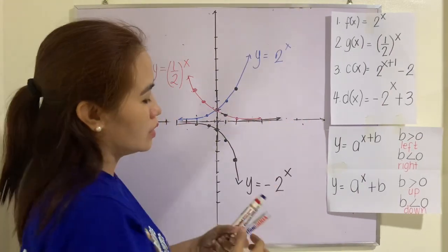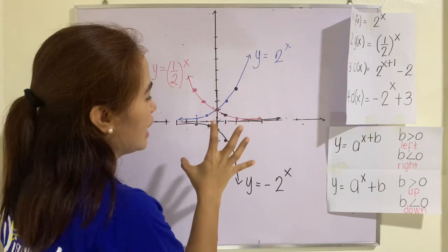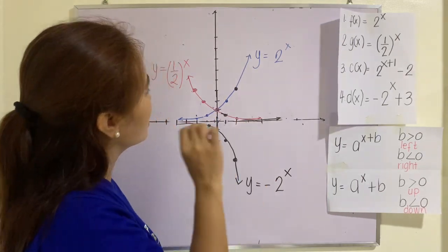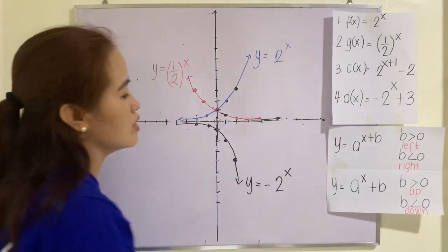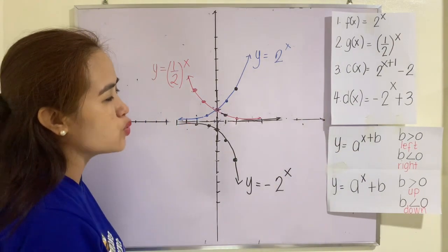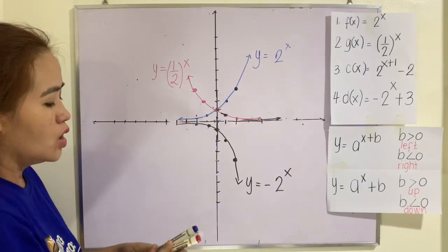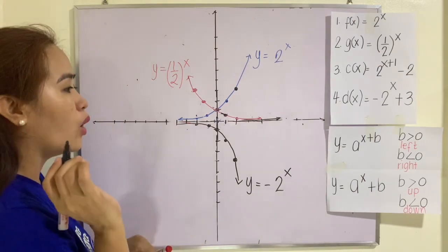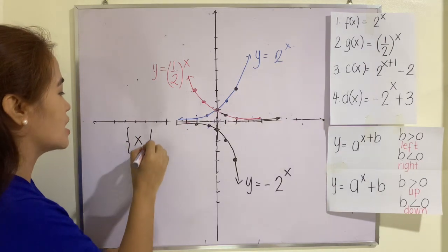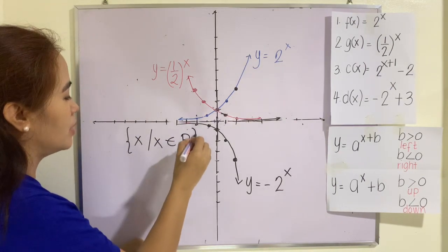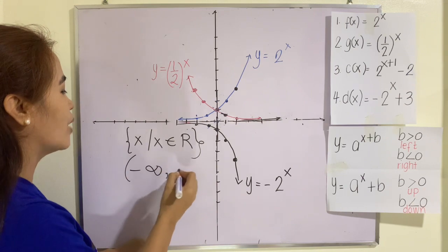How are we going to get the domain of this? Always remember that whatever your graph is, it goes always in all x's from negative infinity to positive infinity. So whatever your graph is, whatever your base is, it covers always negative infinity to positive infinity. Therefore, the domain of an exponential function is always the set of all x's such that x is an element of the set of real numbers. And in interval notation, this is negative infinity up to positive infinity.